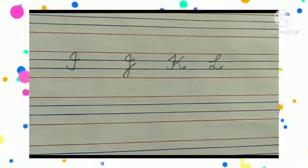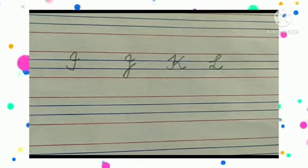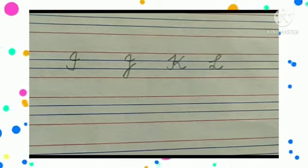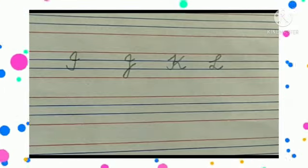So children, let's do revision once again. I says /ee/, J says /j/, K says /k/, L says /l/. I hope these formations are clear to you. Thank you.